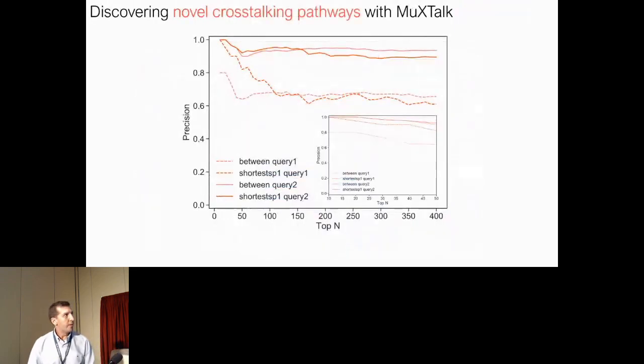Finally, to discover potential novel crosstalking pathways, we applied our method on what we call the discovery set and used tailored PubMed queries to assess the validity of our predictions. For both versions, this resulted in over 80% precision for the top predictions.